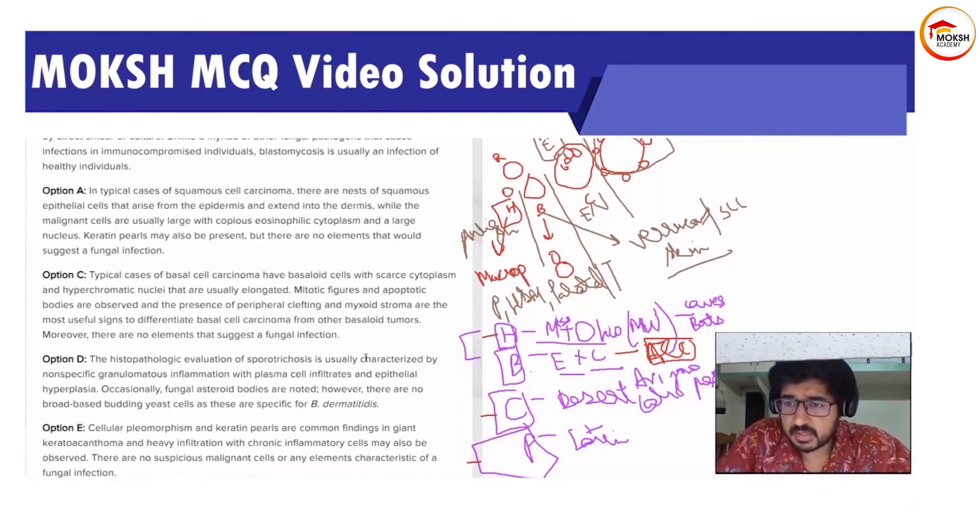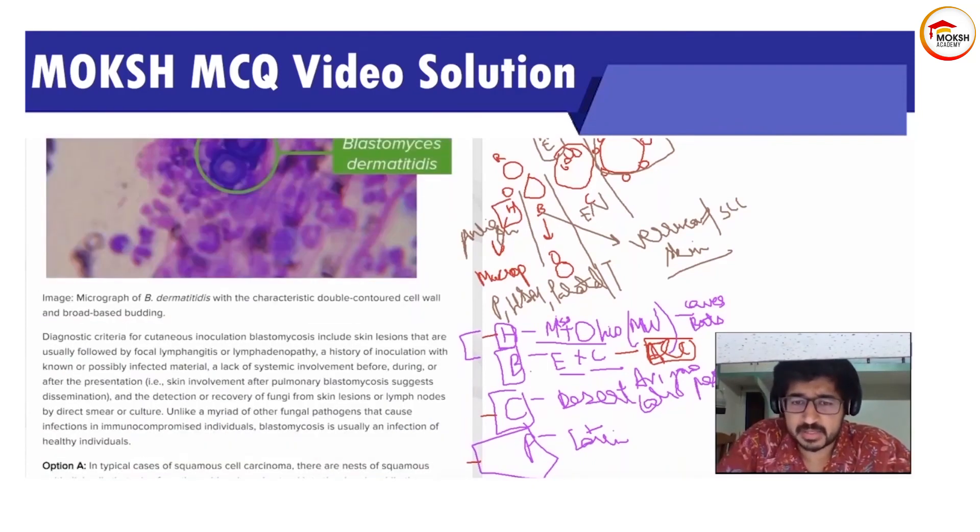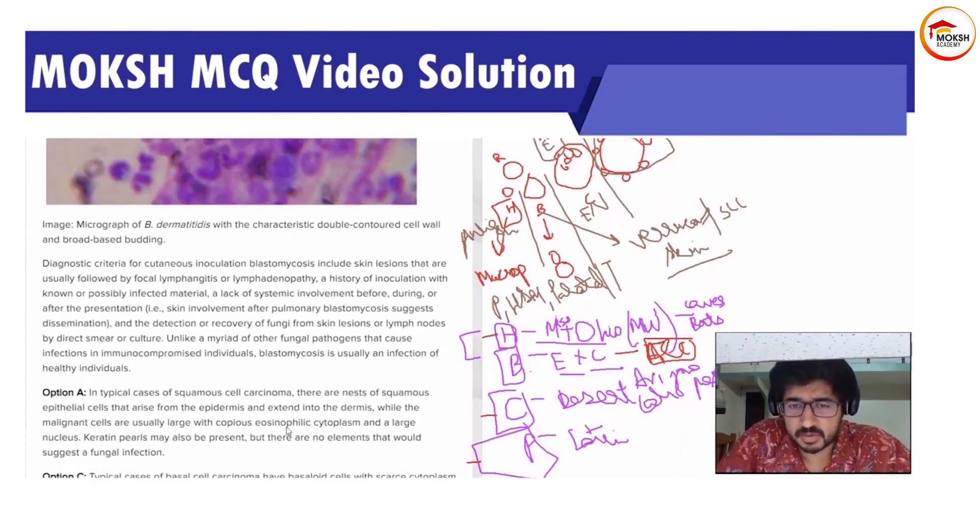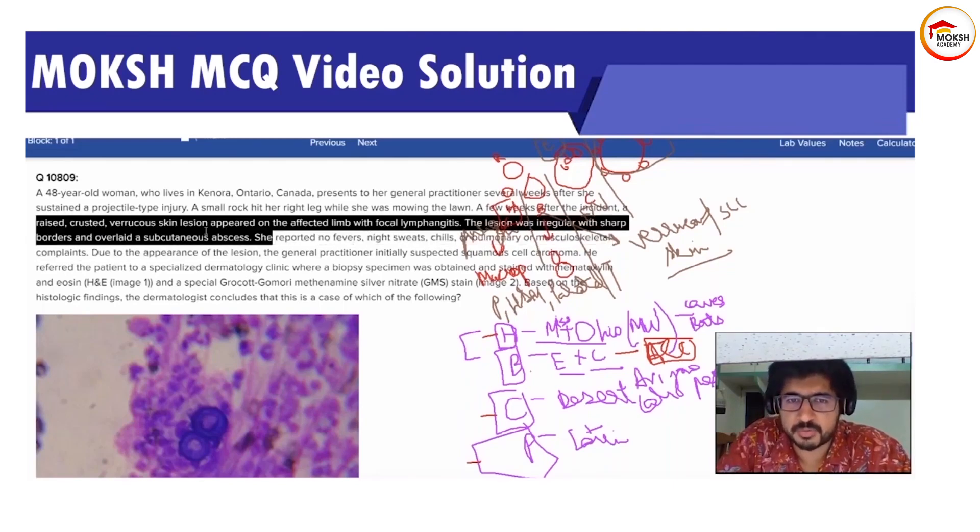If it was squamous cell carcinoma, you would see those keratin pearls and nests of squamous cells. I never read—I never had the skin. You must have noticed whenever I read the questions, I kind of highlight and underline some parts because these are the parts which will actually help you solve the question. Don't worry about the stains and all these things. They're all fancy and try to confuse you, but don't worry. These features which are highlighted over here are more than enough to come to the conclusion and the answer.